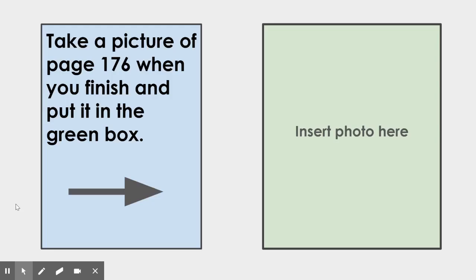Once you have filled in the rest of your graphic organizer, you will take a picture of page 176 when you finish and put it in the green box. If for some reason your camera is not working, I would like you to type in your answer and tell me what are some of the activities that happen during the Chinese New Year celebration. You can type it in the box if your camera is not working — but remember, this is only if your camera is not working. All right, can't wait to see your answers.